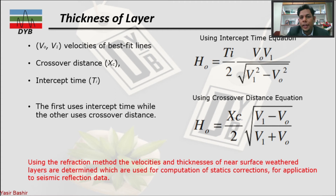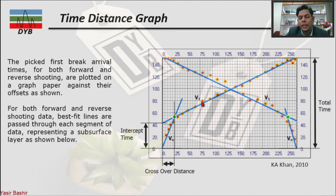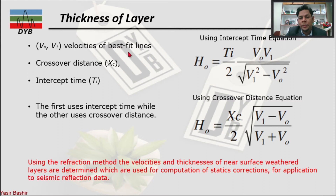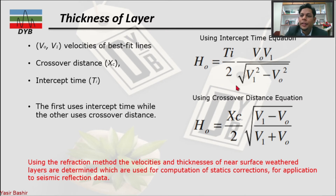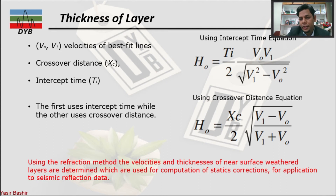V0 and V1 are the velocities of the first and second layers respectively, represented by best fit lines. The crossover distance xc is identified from the time-distance graph. You can calculate the layer thickness by two methods: the intercept equation using the intercept time ti, or using the crossover distance xc. Both the crossover distance and intercept travel time can be used to calculate the thickness of the low velocity zone.